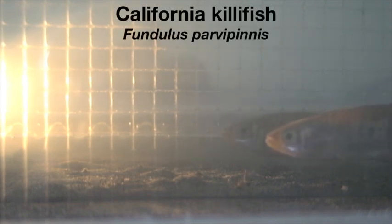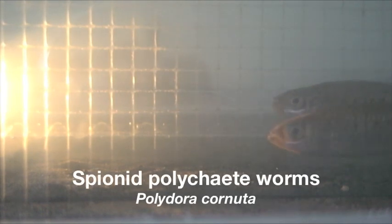You're watching a magnified video of the California killifish, Fundulus parvipinnis, feeding in a laboratory flume on one of their common prey items, spionid polychaete worms.